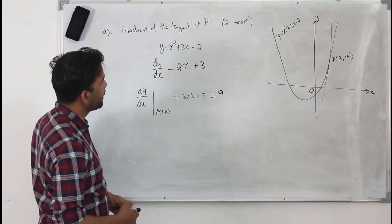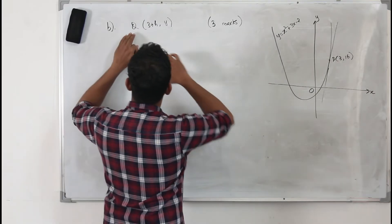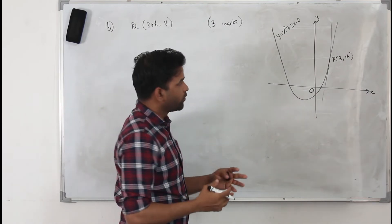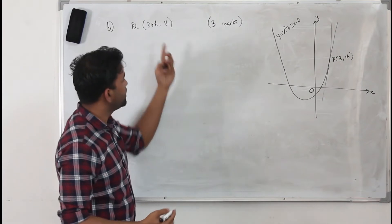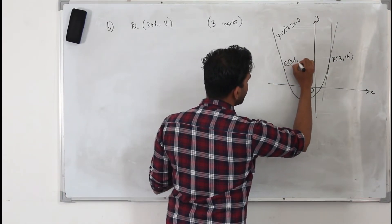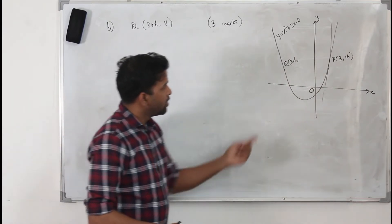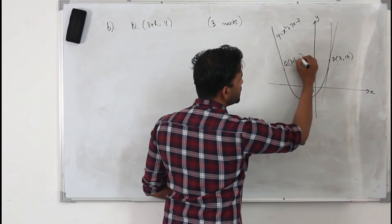Moving on to part B: a point Q with x-coordinate 3 + h also lies on the curve. Find, in terms of h, the gradient of the line PQ, and write your answer in simplest form. This question carries three marks. We take another point Q — we don't know exactly where it is since we don't know the value of h. The x-coordinate of Q is 3 + h, and the y-coordinate is not yet given.